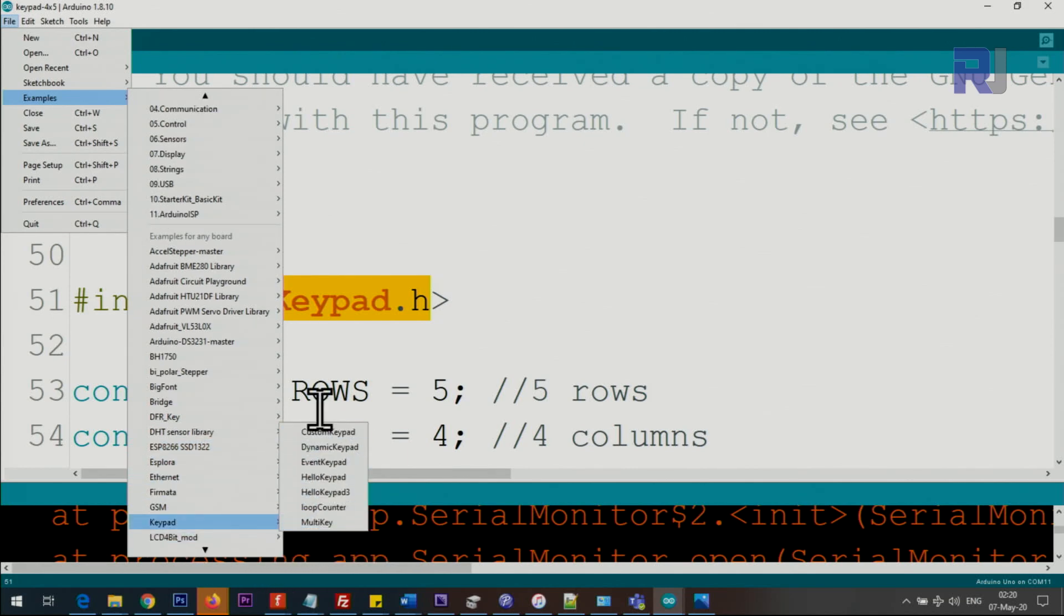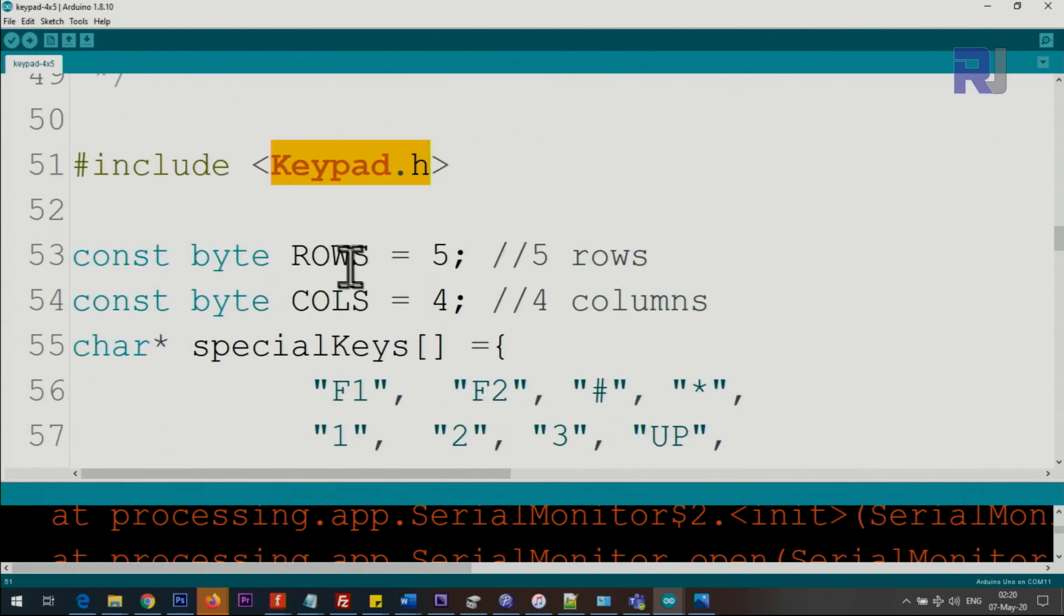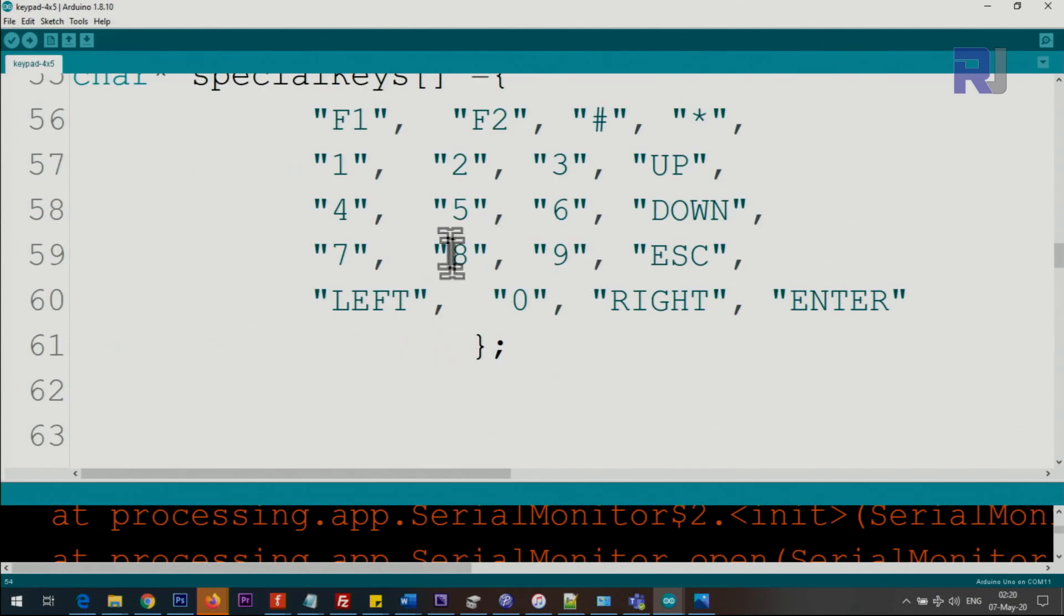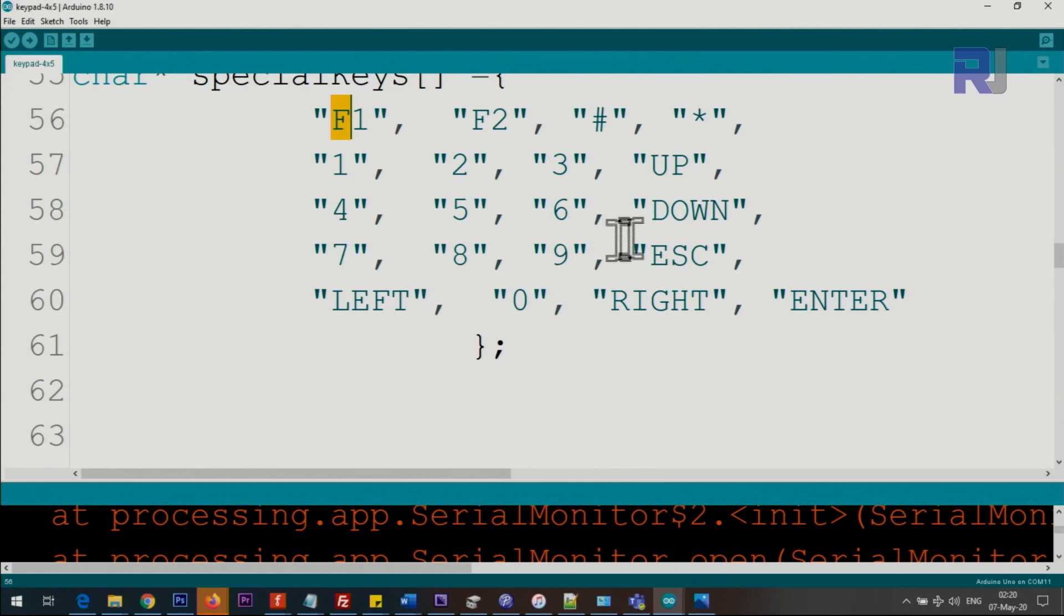Under the keypad you will see all these examples. I've taken one of the examples because it had the main array, so I modified it heavily. This variable is holding the number of rows, and here number of columns. Then this array, special keys, inside the double quotation we have entered all the values for the keys. You can change them as you wish, it doesn't matter which size of the text that you want to put.